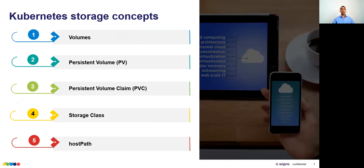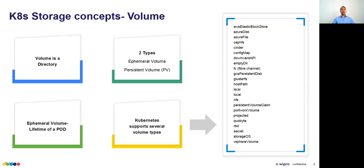For those not familiar, here is a quick high-level recap of Kubernetes storage concepts: volume, persistent volume, PVC (persistent volume claim), storage class, and host path. A volume is a directory — not a new concept in Kubernetes. There are two types: ephemeral volume and persistent volume. An ephemeral volume has the lifetime of a pod, so if you restart the pod, that data will be gone.